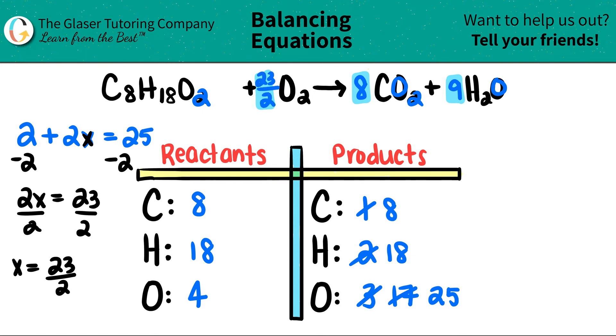Whenever you have a fraction, all you're going to do is you're going to multiply the entire equation by the denominator. In this case, I'm going to multiply every coefficient by two, so all the coefficients are going to change. Because basically two times twenty-three over two, the twos will cancel, and now you're just left with the whole number of twenty-three.